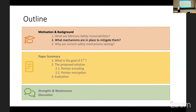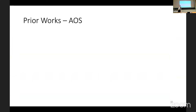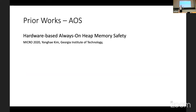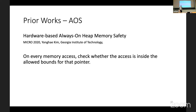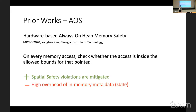Let's look at what mechanisms are currently in place to mitigate them. The paper mainly focuses the comparison on AOS and MTE. Starting with AOS, presented at Micro 2020, it mainly consists of storing the bounds to which each pointer is allowed to access, and on every memory access, checking whether the access is within those allowed bounds. On the positive side, this mitigates spatial safety violations because you cannot access out-of-bounds. However, this introduces high overhead of in-memory metadata — you have to store those bounds somewhere.